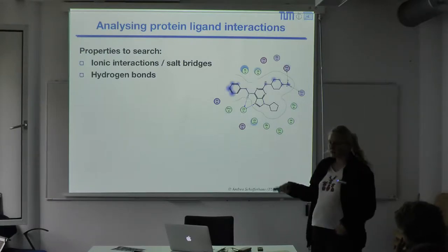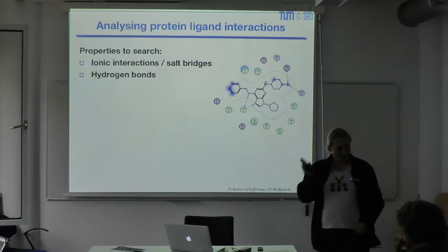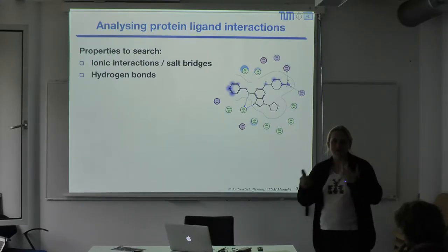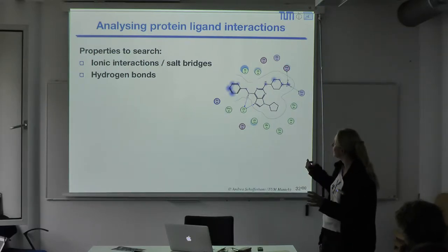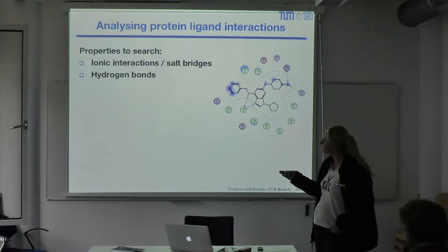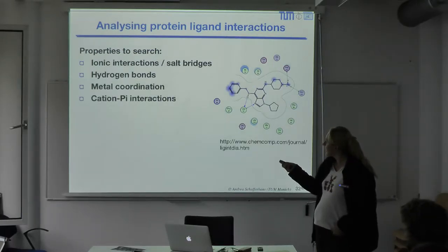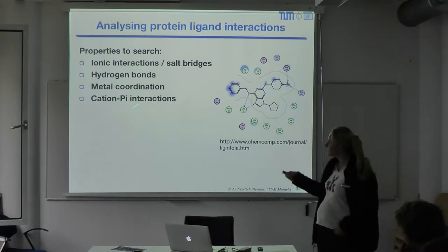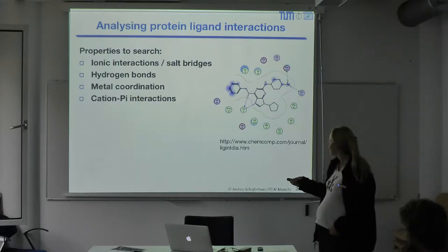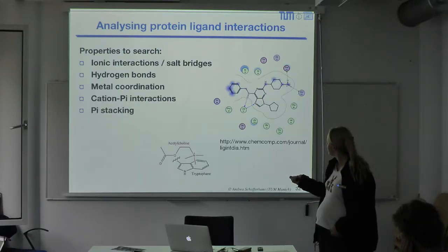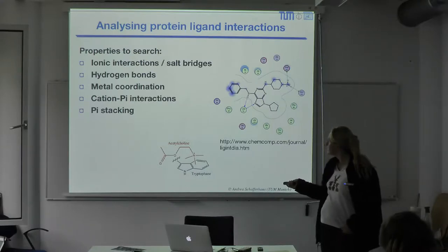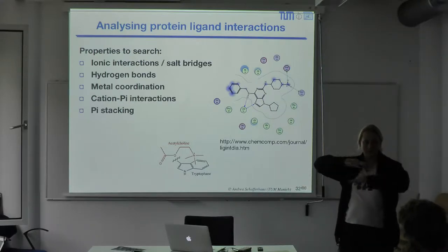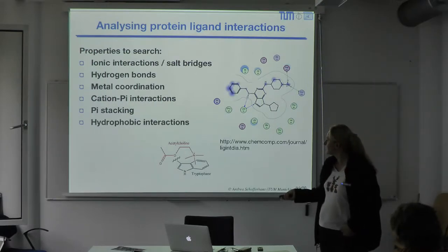Now if we want to analyze protein-ligand interactions — having found binding sites, we want to find what could bind there. If we want to analyze protein-ligand interactions, we look for the kinds of interactions discussed before: ionic interactions, hydrogen bonds, metal coordination, cation-pi interactions, and also pi-stacking. These are the typical interactions we look for and want to optimize for.